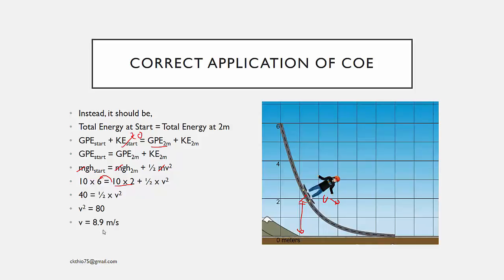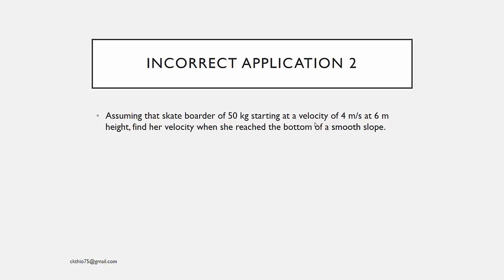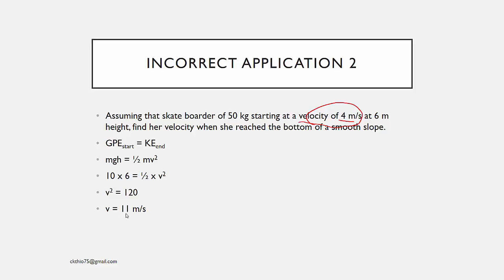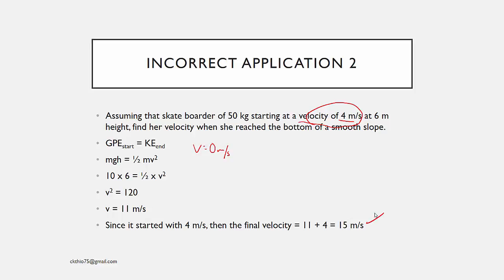Another possible incorrect application: this time the starting velocity is 4 m/s instead of 0, at 6 m height. Find the final velocity at the bottom of the smooth slope. The incorrect approach is to follow the same steps as before, find the ending velocity is 11 m/s when starting velocity is 0, and then simply add 4 — concluding the final velocity is 15 m/s. However, this is a wrong application.